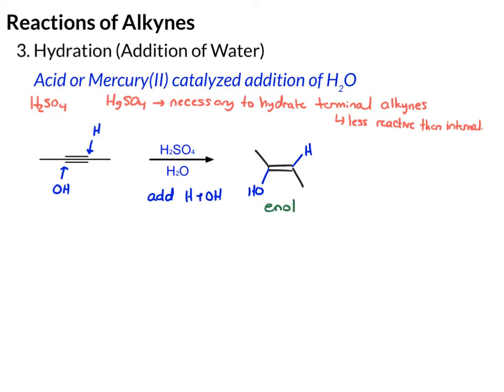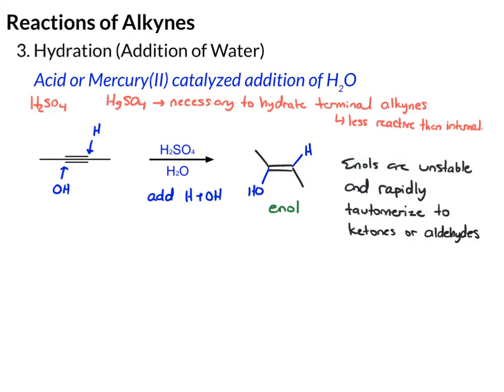Enols aren't very stable — they don't hang around for long. They'll rapidly change into an aldehyde or a ketone, and this change is called a tautomerization. So in this case, we have our enol, and it will undergo tautomerization. We're going to look at the mechanism of this next.